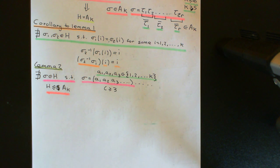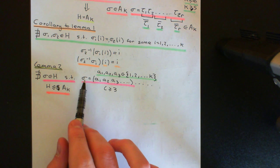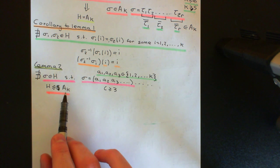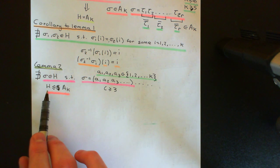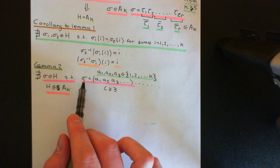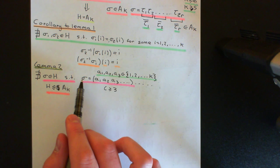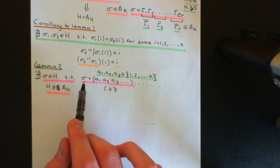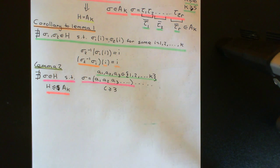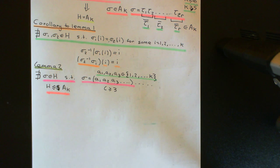So how can I arrive at a contradiction? I can conjugate sigma by some element alpha. If I can show that I can conjugate this by an element of A_k, then I know I'll get something that's back in H. And if I can get something that contradicts the corollary to Lemma 1 — i.e., something that maps certain elements onto the same elements as sigma but is a fundamentally different permutation — then I will have contradicted the corollary to Lemma 1.